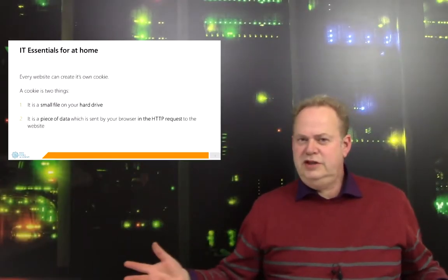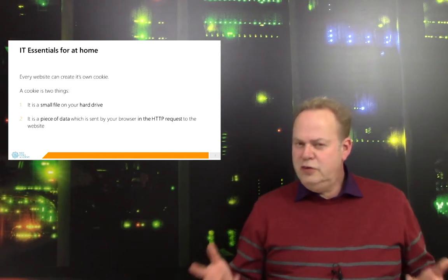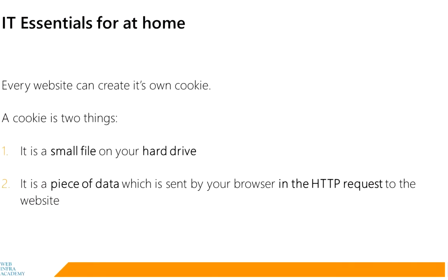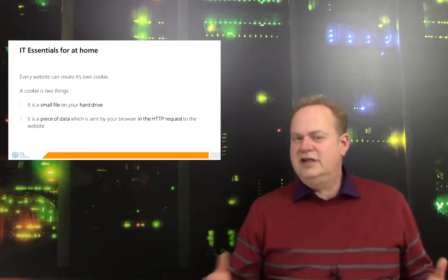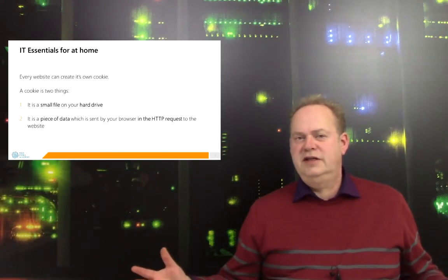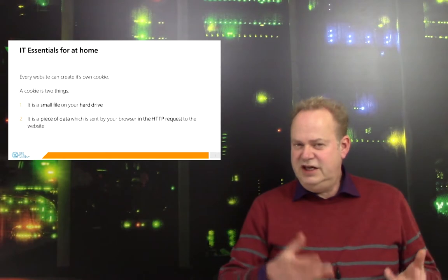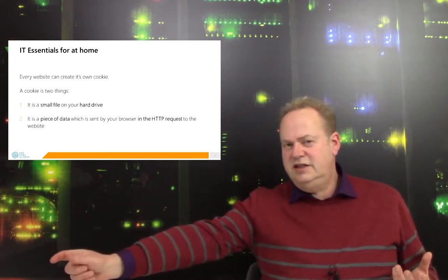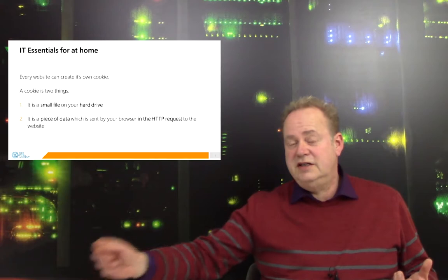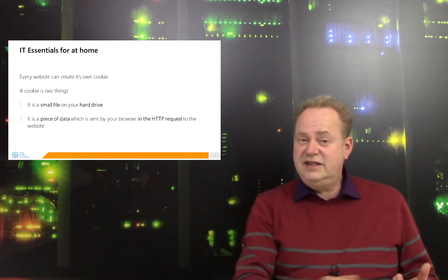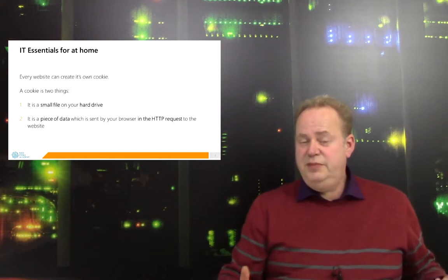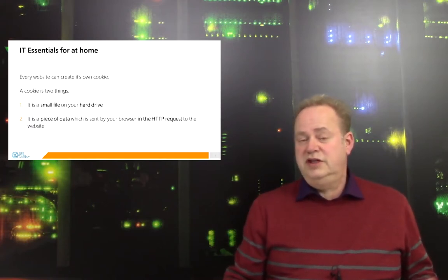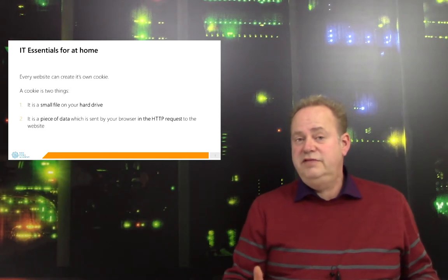So what's a cookie and what's it used for? A cookie is a small piece of data, a file, stored on the laptop or desktop, and it's sent with each HTTP request to a website. HTTP is the language we speak on the internet. Your browser, Edge or Chrome, generates an HTTP request, sends it to the website, and the website will send an HTTP reply back. HTTP by default supports cookies, and your browser supports by default a cookie.